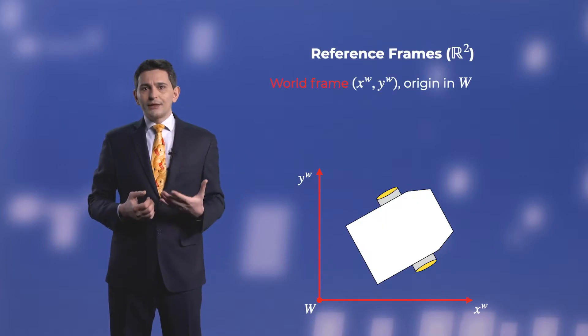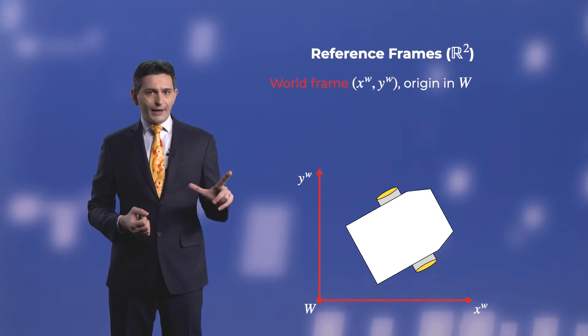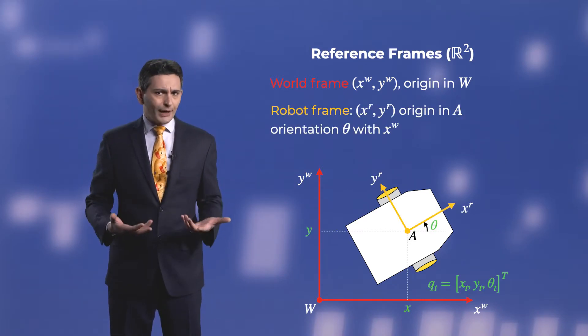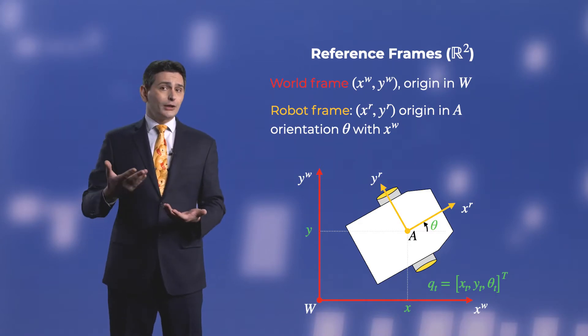To formalize a robot's pose, we need to introduce reference systems. We take a world frame with origin in W, and a robot or body frame which moves with the robot, and has origin in point A, at position X and Y in the world frame. It is important to express the coordinates of any point with respect to the robot and the world frames, which in the general case are rotated and translated, one with respect to the other.